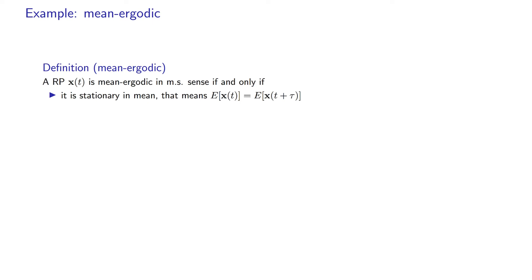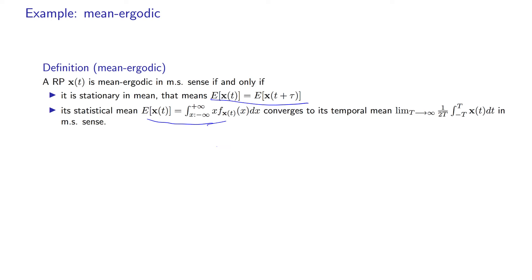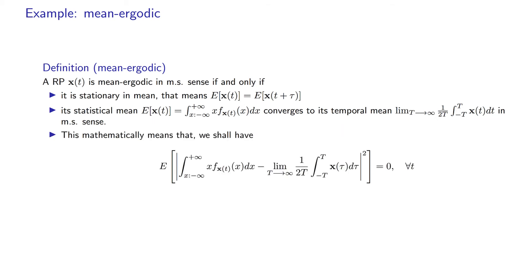I formulate the definition of ergodicity of a random process in the mean sense with convergence in mean square sense. First, the process should be stationary in the mean. Second, the statistical mean should converge to the temporal average. The temporal average is computed over a large interval, and when T is large enough the mean square error between the statistical mean and the temporal average should be zero. This is the definition of a stochastic process being ergodic in the mean sense.